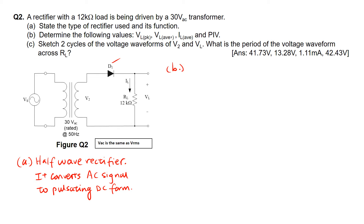For part B, we are to determine the following four parameters: VL peak, VL average, IL average, as well as PIV. All four parameters that we are going to calculate are based on the half-wave rectifier system.